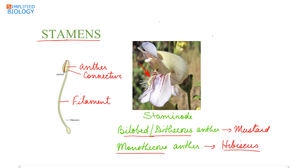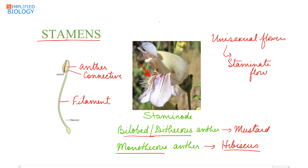A unisexual flower having only stamens is referred to as a staminate flower, while a sterile stamen is referred to as a staminode. In this flower, a normal stamen has a filament and anther, while the sterile stamen has no anther.